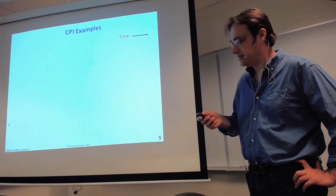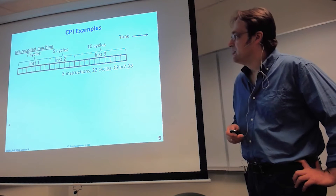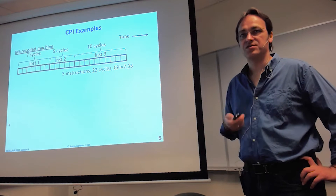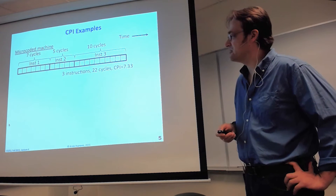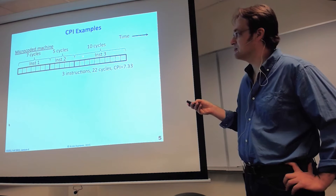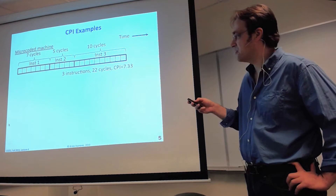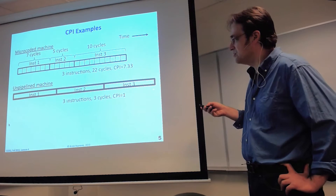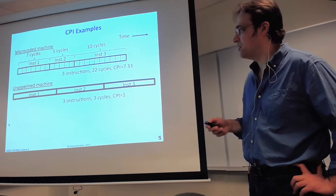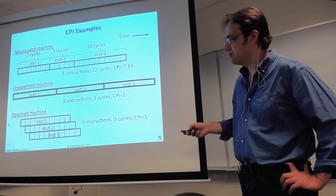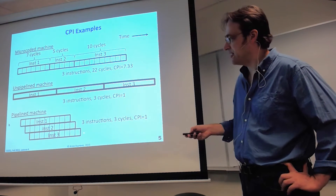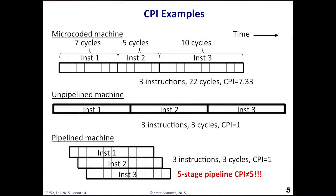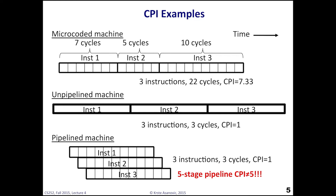When talking about CPI, remember you should average over lots of instructions. A microcode machine simply adds all cycles together — for example, three instructions taking seven, five, and ten cycles gives a CPI of 7.3. An unpipelined machine has CPI of one but very long cycles. The goal of the pipeline machine is to overlap pieces of all instructions so that, essentially, three instructions finish in three cycles and CPI is basically one — one instruction completes every clock cycle. A five-stage pipeline does not have a CPI of five.